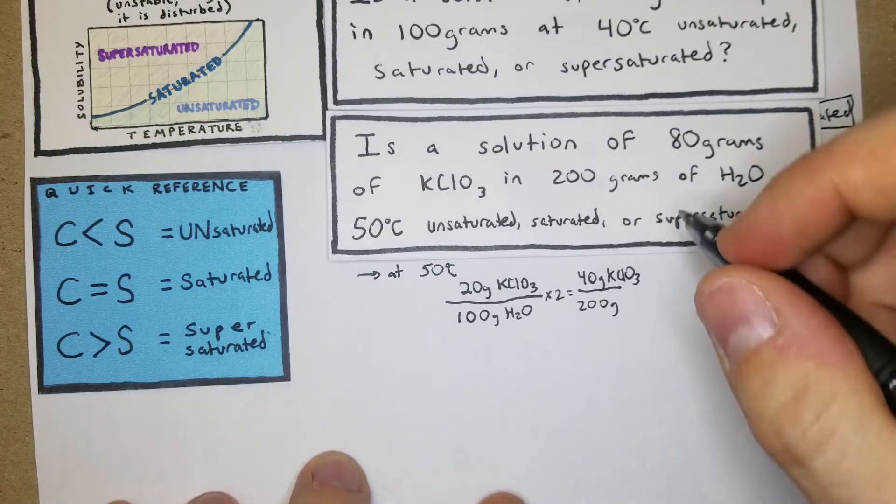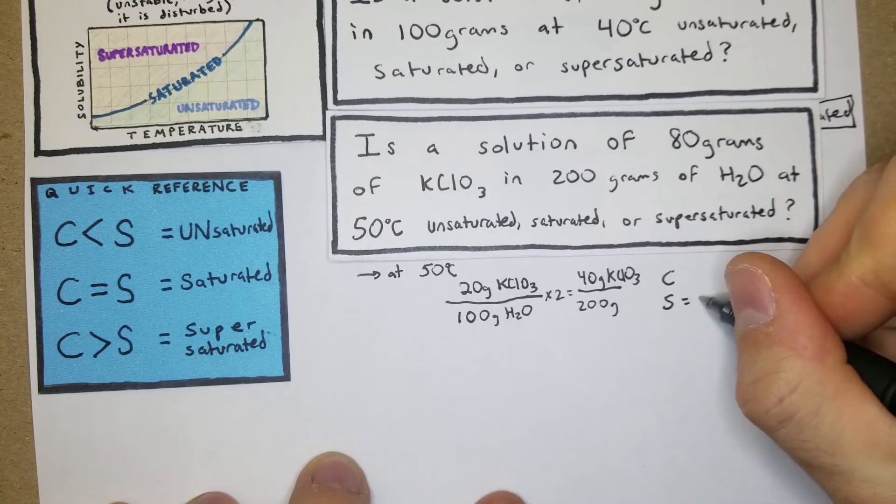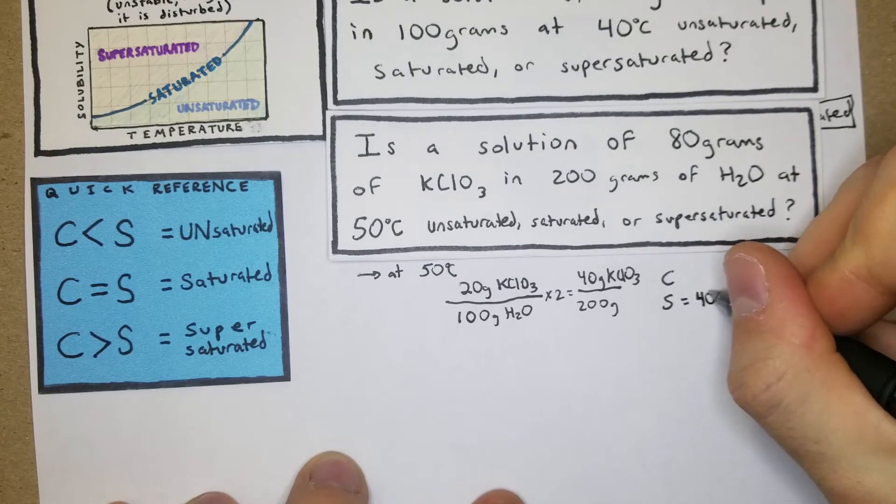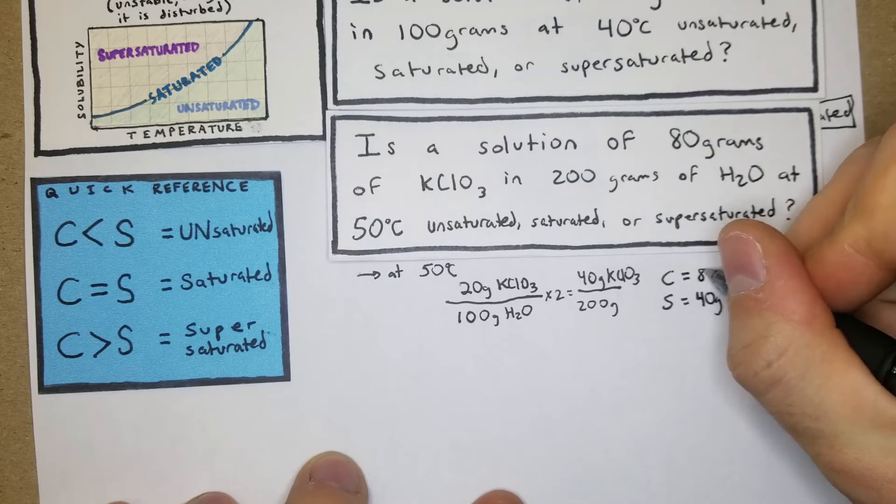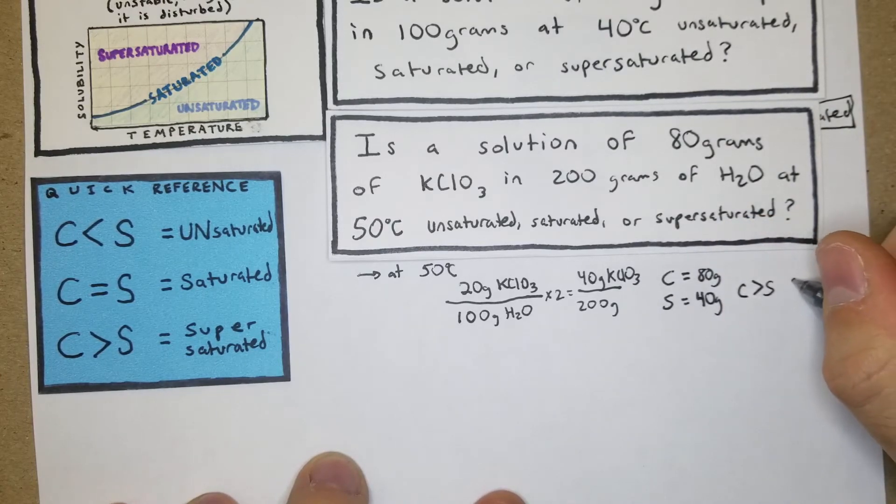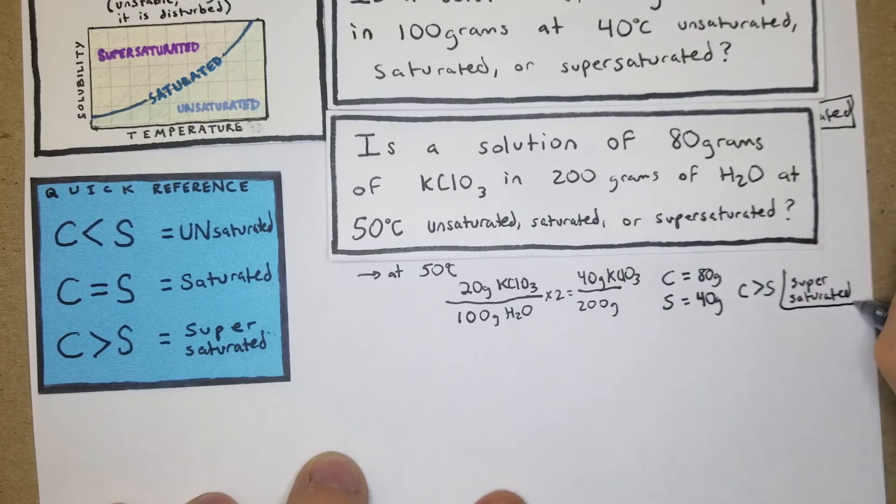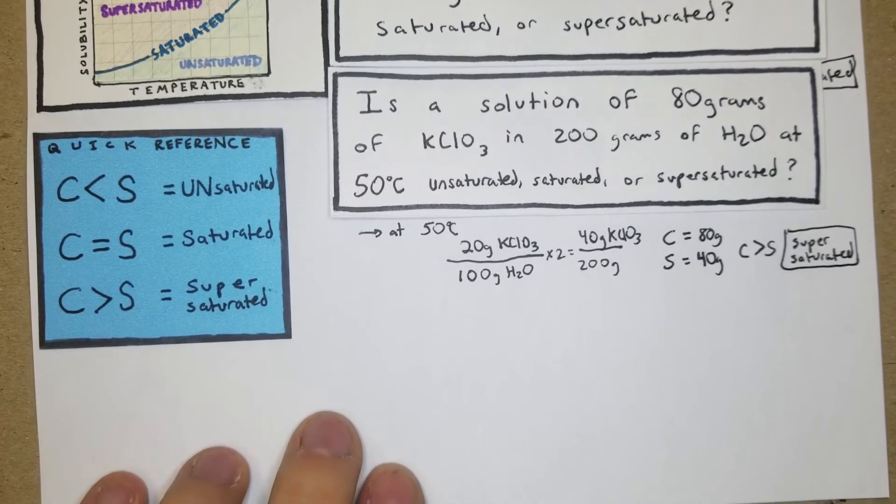Now we'll compare those. Our solubility is going to allow for 40 grams per 200, and our concentration is 80 grams, so it's double that. Again, our concentration is greater than our solubility, which means it's supersaturated.